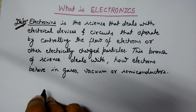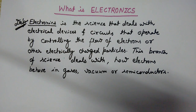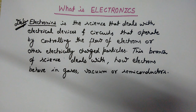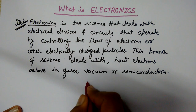After the definition of electronics, let's start with the different types of components that are used in electronics. These common components include resistors, capacitors, inductors, diodes, and transistors, etc. These are the types of components that are used frequently in electronics — these are very basic components.